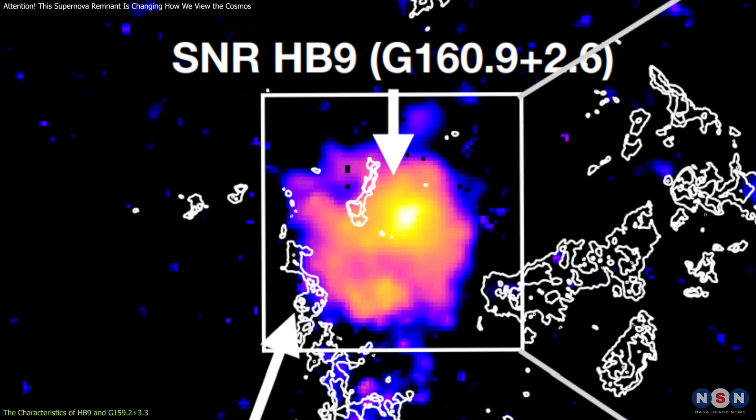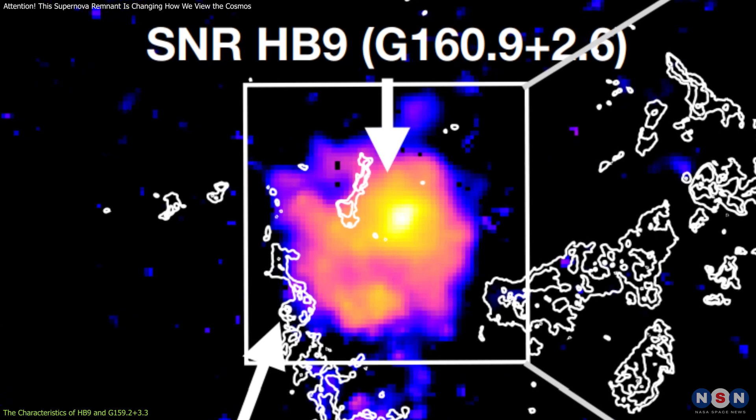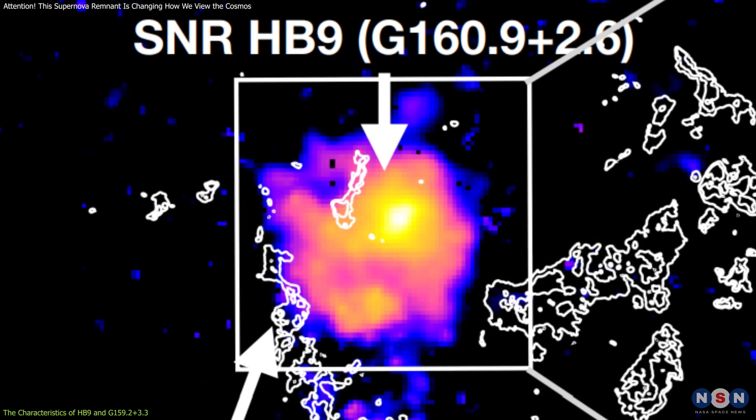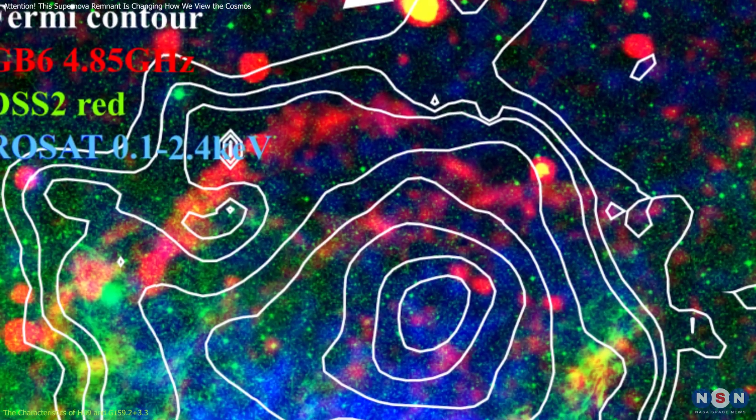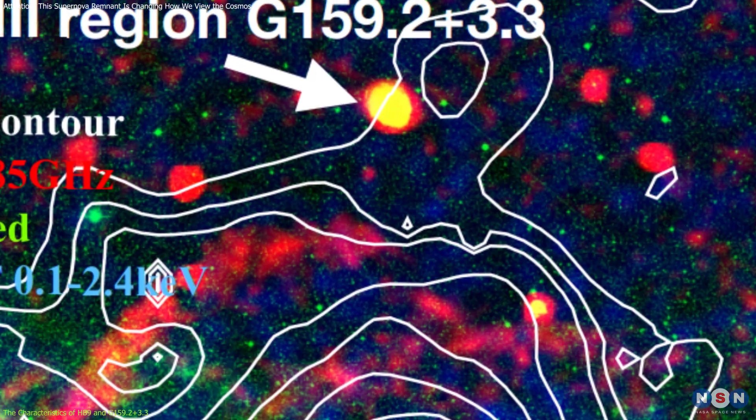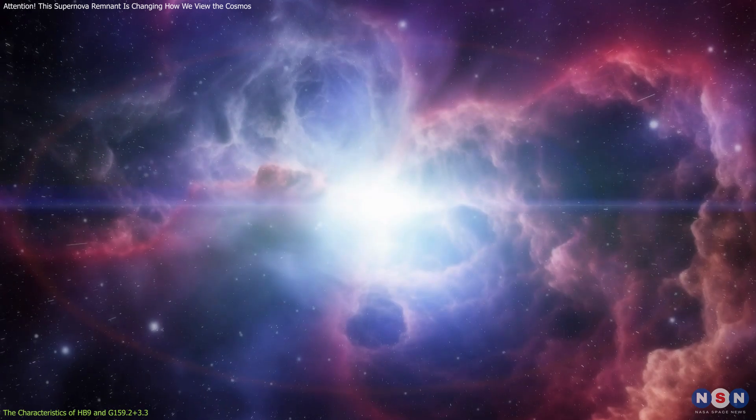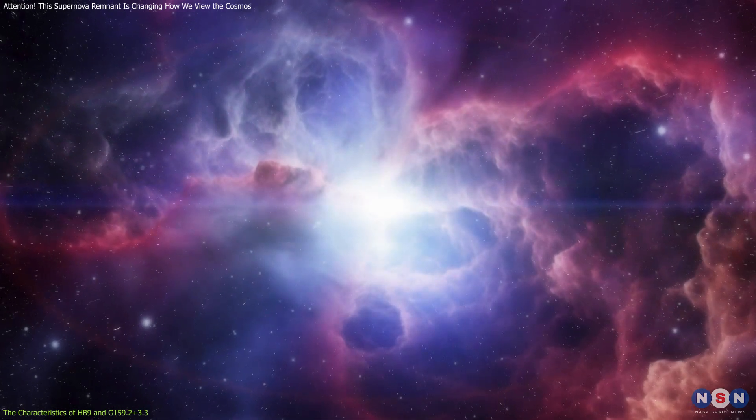The team found that while Hb9 is indeed bright in gamma rays, its morphology does not clearly align with the surrounding molecular clouds. However, there was a weak connection in gamma rays between Hb9 and the infrared bright shell of the region. This suggested that there might be some interaction between the remnant and the H2 region, but a weak one.